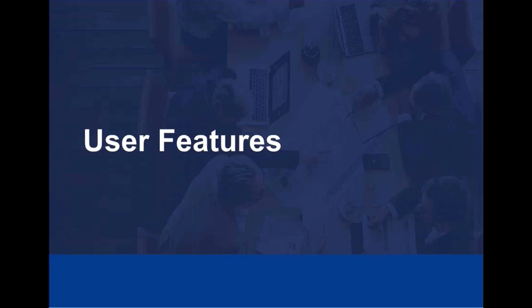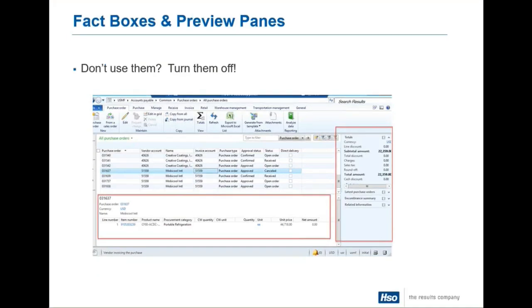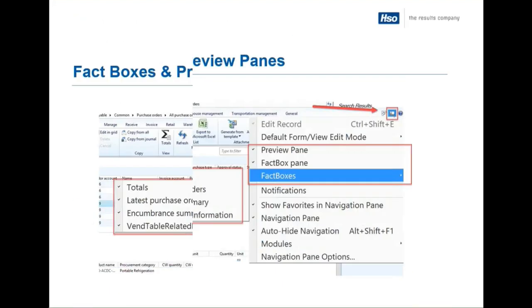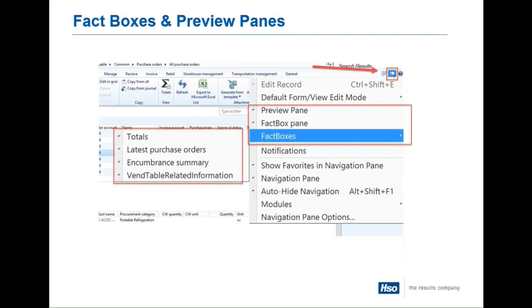Getting into some user features — for those that are not necessarily in IT but are users wanting to know what they can do. In AX there are these things called fact boxes and preview panes. In many cases they're useful; in a lot of cases they're just things on the screen. If you're not using them, turn them off. What AX does is the ones on the right-hand side of the screen are calculations — AX is going to pull another query, do some calculations, and display the information. If you turn off those boxes, AX is just going to show the grid and not do those extra steps, saving time and bringing up that screen a lot faster. To turn these off, look for the little button up in the right-hand corner. It's called the fact boxes. If there's a checkbox next to it, it's enabled. You can shut them all off or be specific.